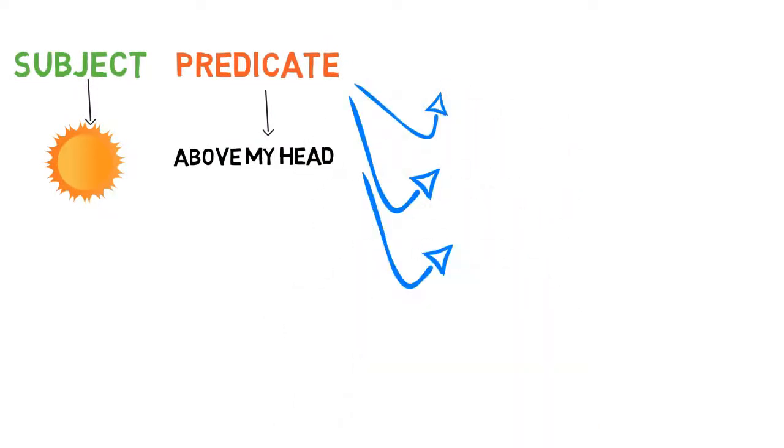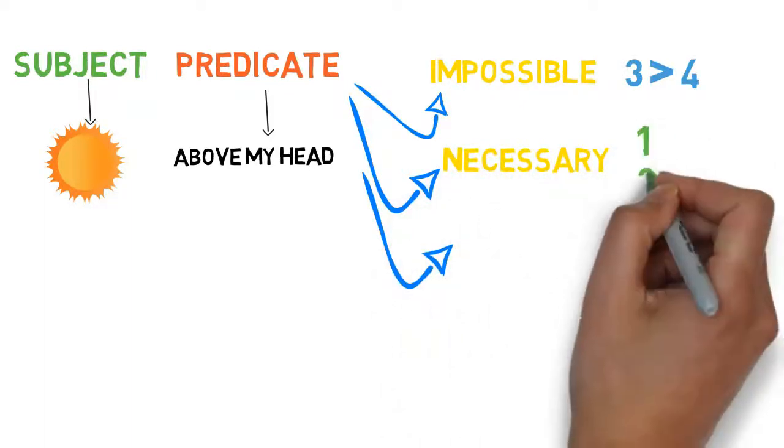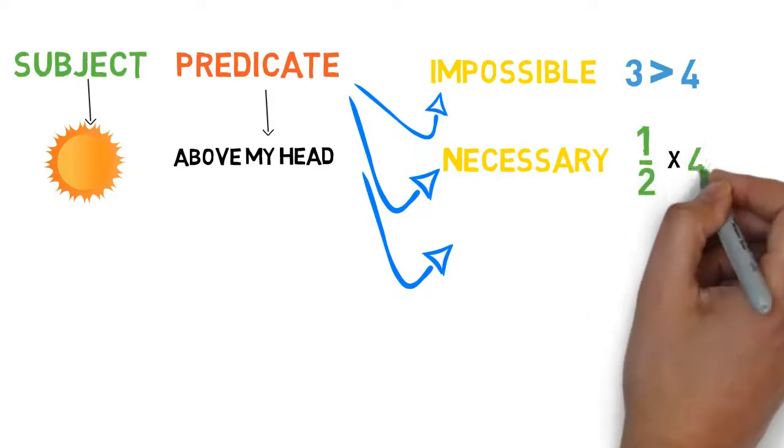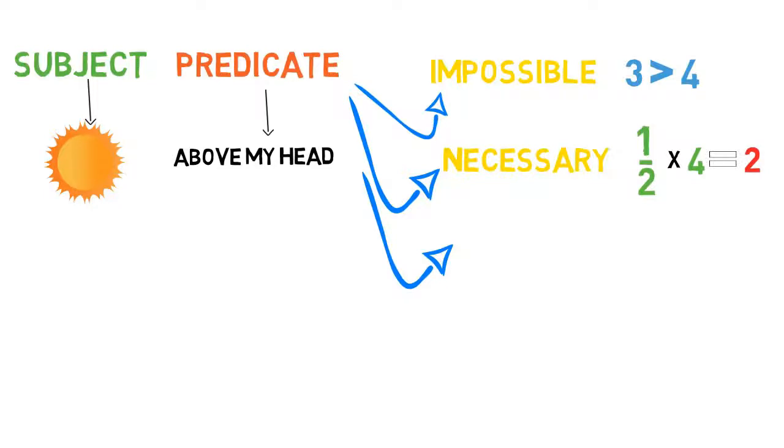Number one, impossible. It is like me saying the number three is greater than four, and this is impossible. Number two, necessary. It is like me saying two is half of four, and this is necessary as it's always the case.